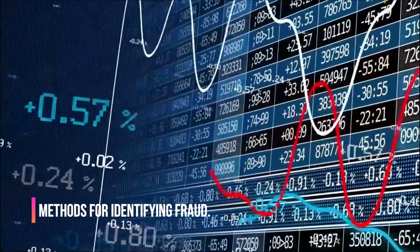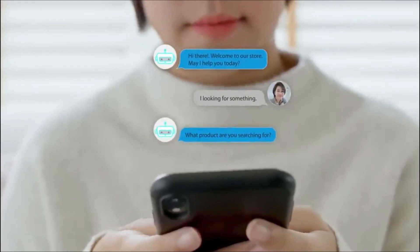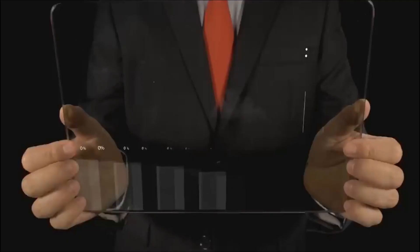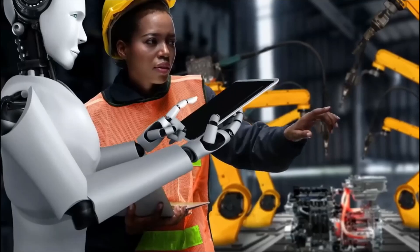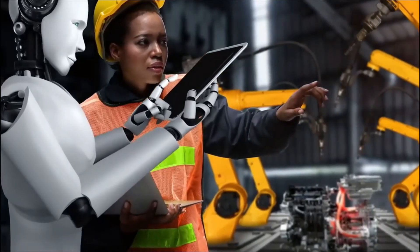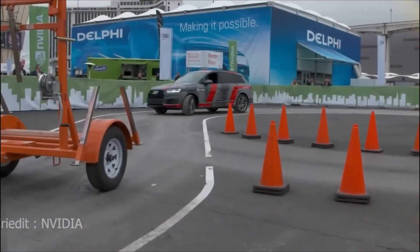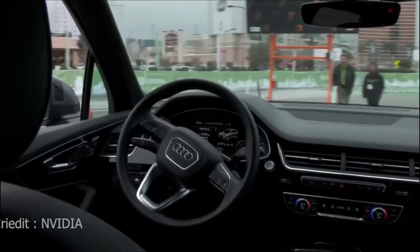Methods for identifying fraud. Through the examination of transaction patterns, the identification of anomalies, and the prevention of unauthorized access, AI is able to detect fraudulent transactions in real time. This protects clients of financial institutions as well as the institutions themselves from fraudulent activity.